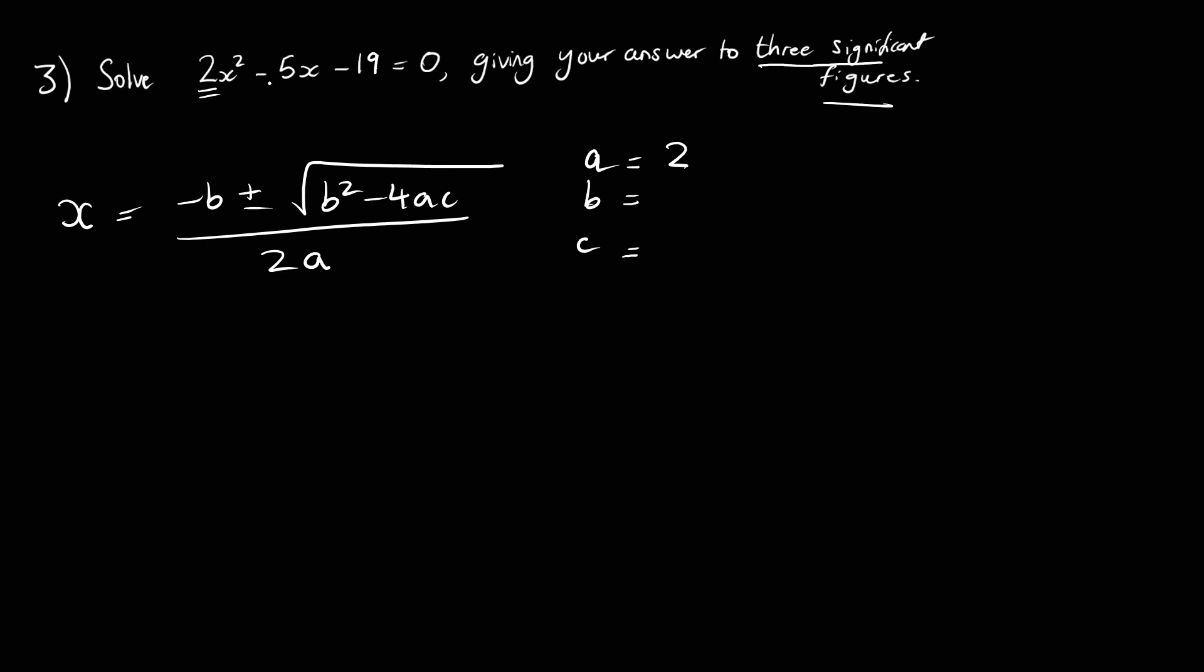So a is what's in front of x squared, that'll be 2, b is what's going to be in front of x, which is minus 5, c is going to be the number at its own, which is minus 19. Remember in those minuses, or it'll go wrong. And then we've got two things to put in our calculator, we're going to put in when this is a minus, and also when it's a plus. So I'll do the minus first.